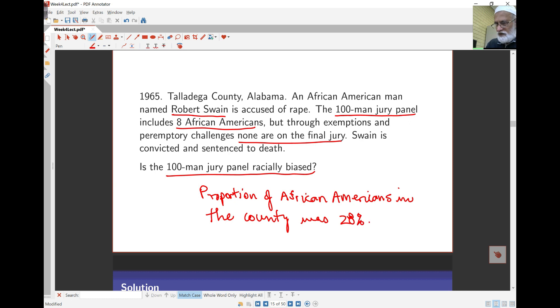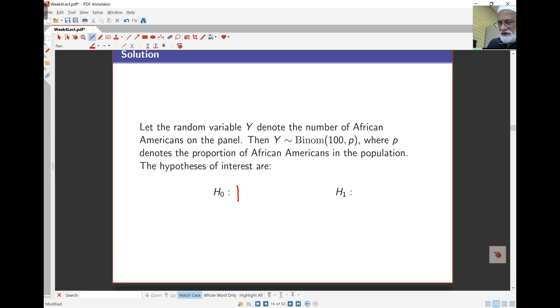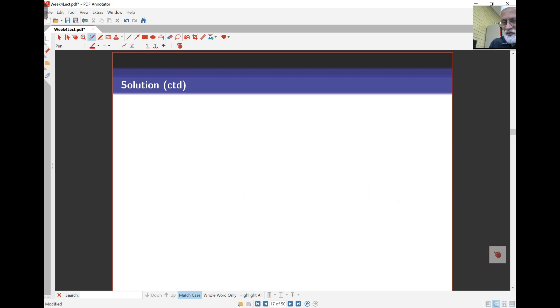So we're testing the hypothesis: H₀: p = 0.28 versus H₁: p < 0.28. The panel is racially biased if there are fewer than the population proportion in the panel.